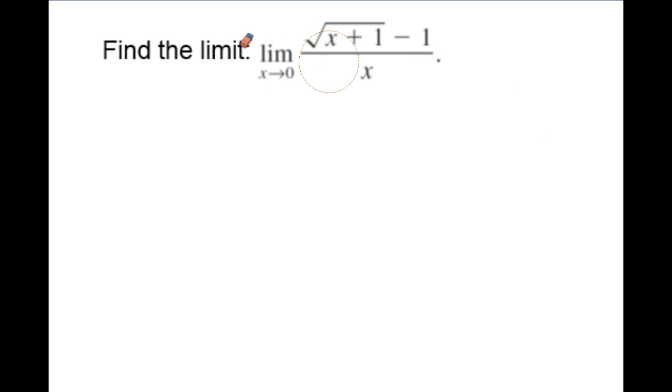It says the limit of the square root of x plus 1 minus 1 over x as x approaches 0. Now this one's a little tricky because obviously we can't factor this. So now what we're going to try to do is we're going to try to rationalize. Now in the past what we've done is we've rationalized the denominator, and our goal was to get the radical out of our denominator. Well we can't use direct substitution on this because it's going to give us 0 divided by 0 which we can't evaluate.